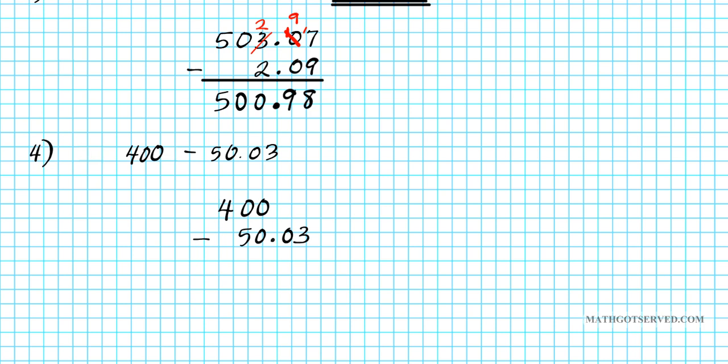So we're going to align this vertically. 400 and then 50.03. Operation is subtraction. We want to find the difference.